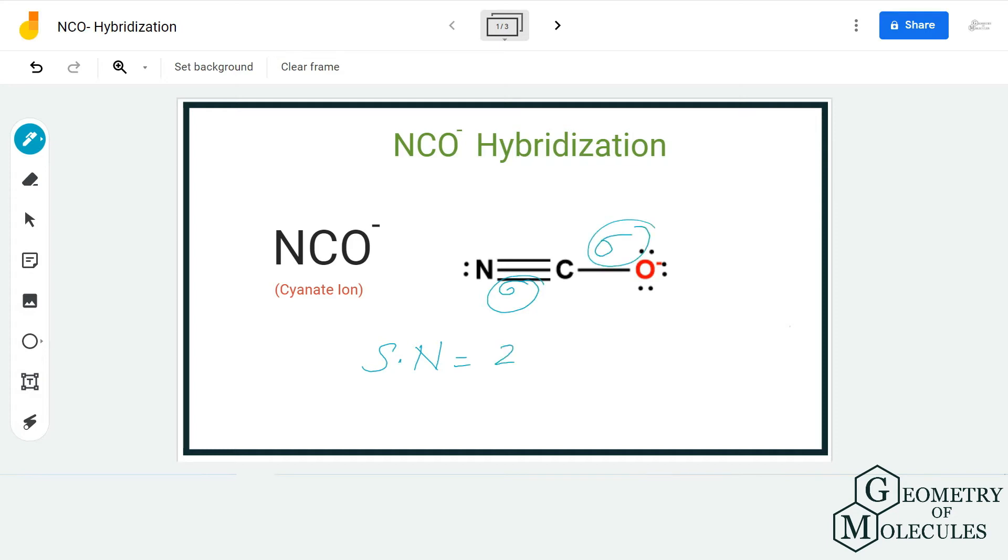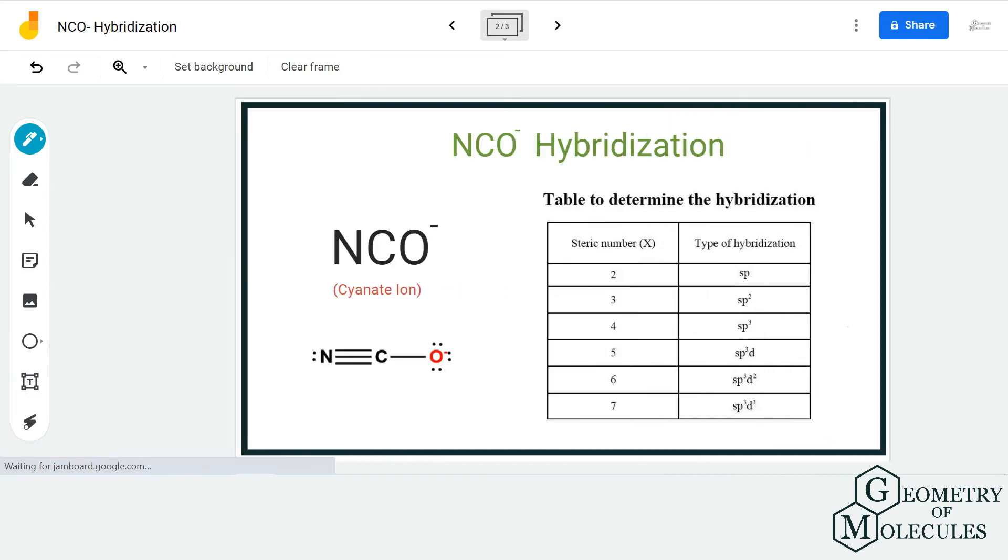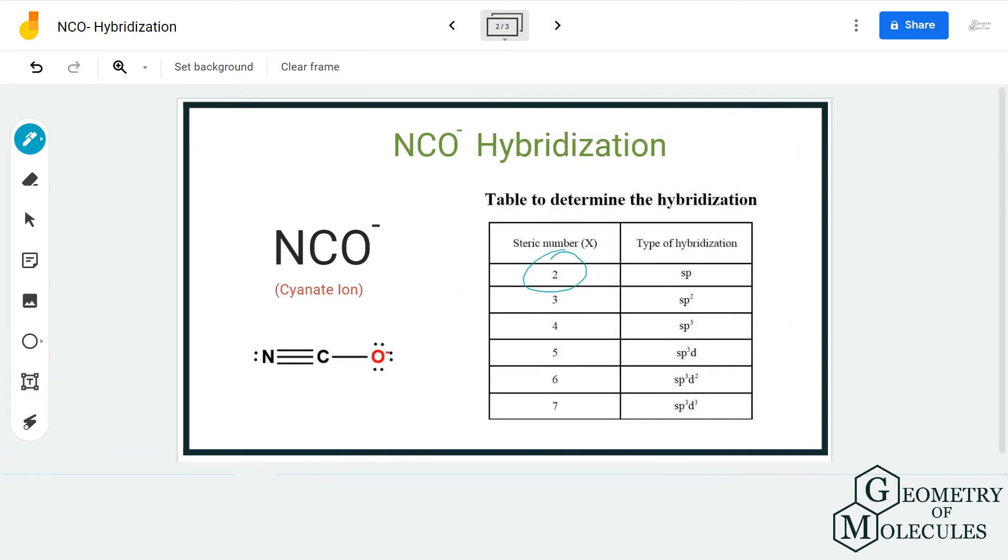So we will consider the steric number as two. And if you look at this table, you can see that the steric number two corresponds to SP hybridization.